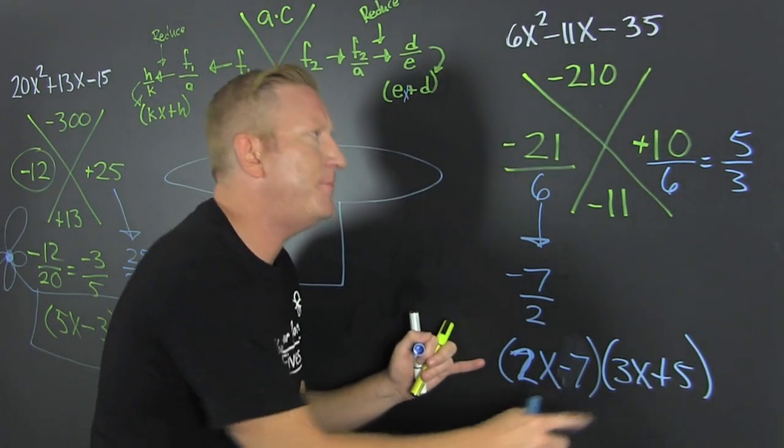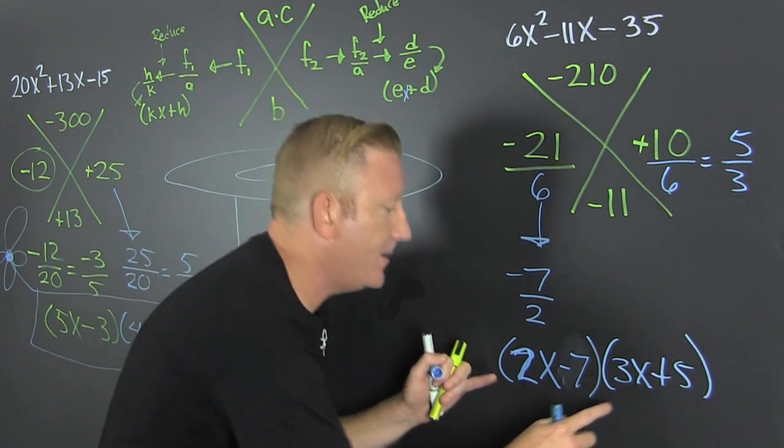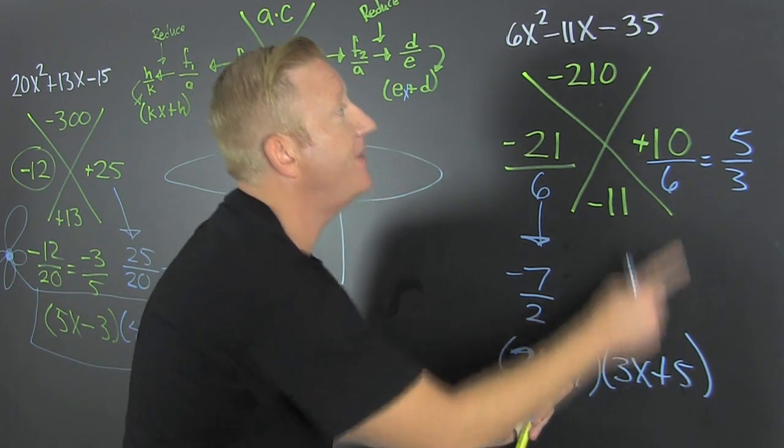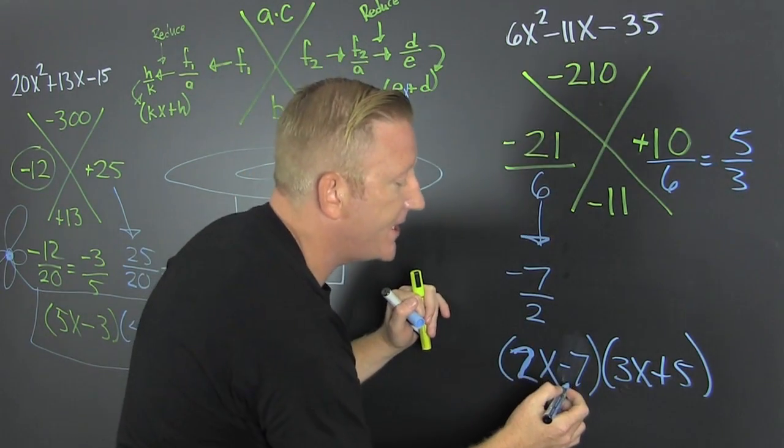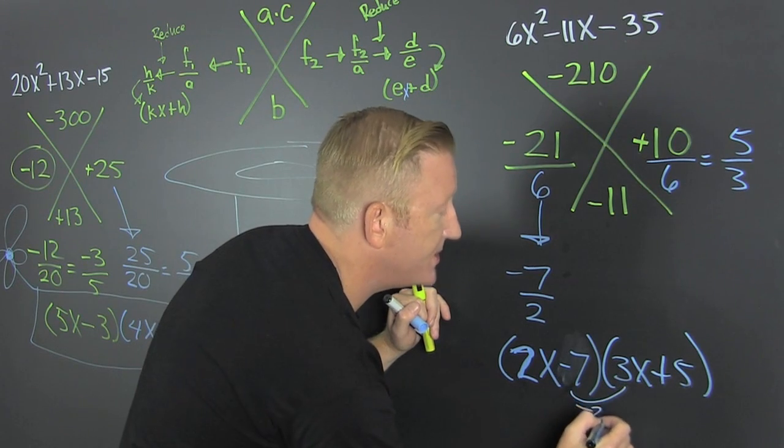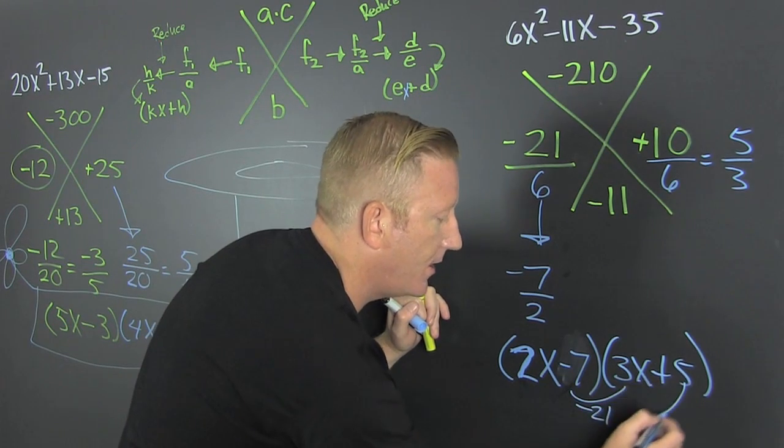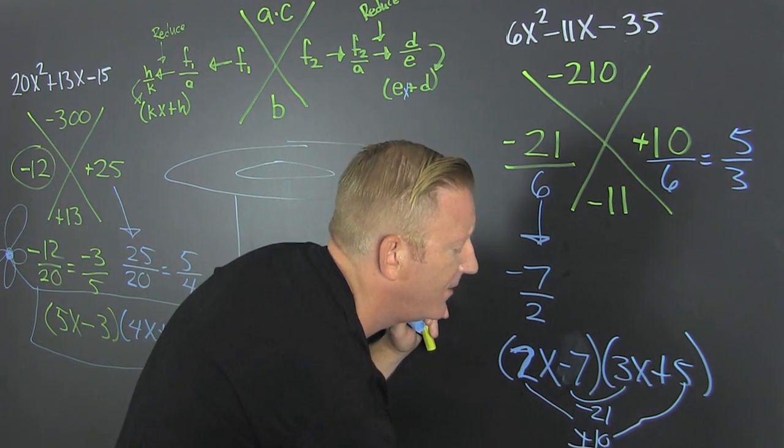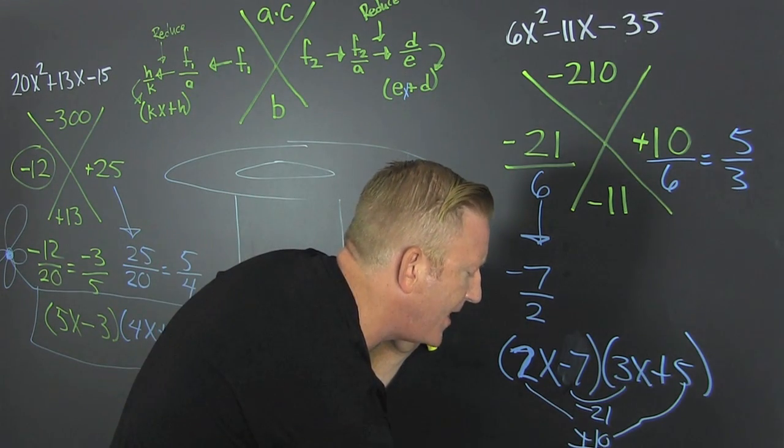But if you don't believe me, check it. Then I have a 3 times a 2 and that gets a 6. The minus 7 and the 5, that gets a minus 35. Then that's a minus 21 and plus 10. Look at that, it works out.